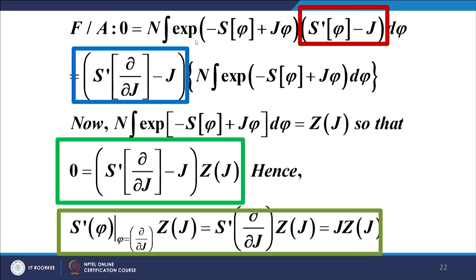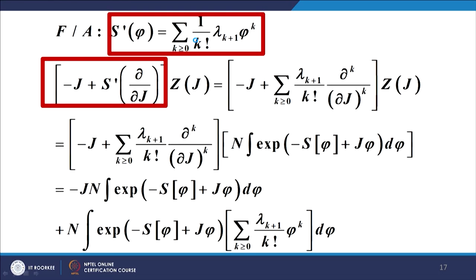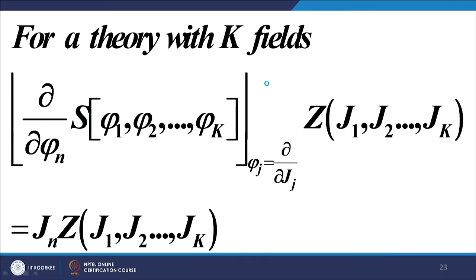We now revert to where we started: S'(d/dJ) minus J operating on Z(J), the expression in the second red box. We find that this whole expression equals zero. This gives us the Schwinger-Dyson equation, written in the dark green box at the bottom of the slide. Simplifying — replacing the integral with Z(J) — we get the result shown in the dark green box, which is the Schwinger-Dyson equation for the generating function Z(J). In the case of a theory with K fields, the same result can be generalized accordingly.